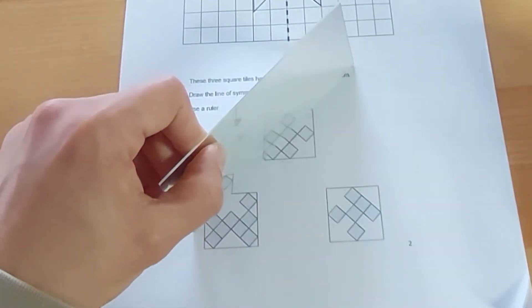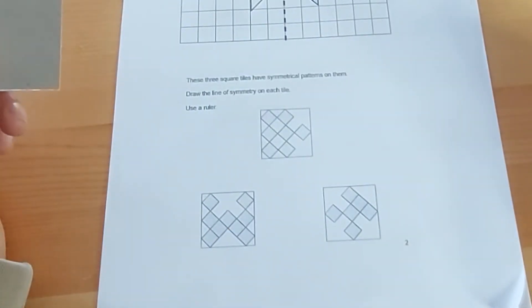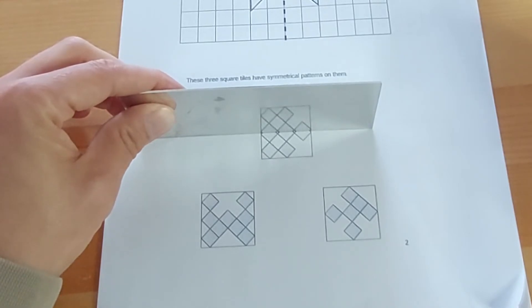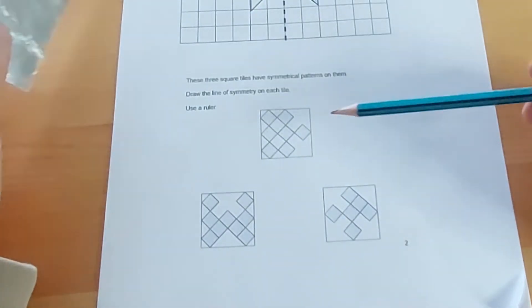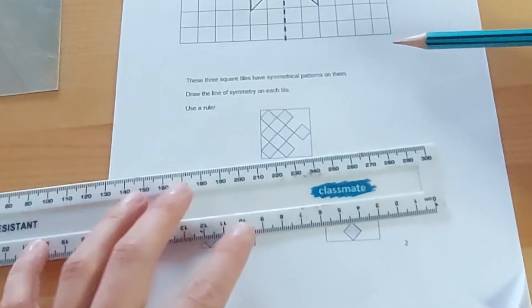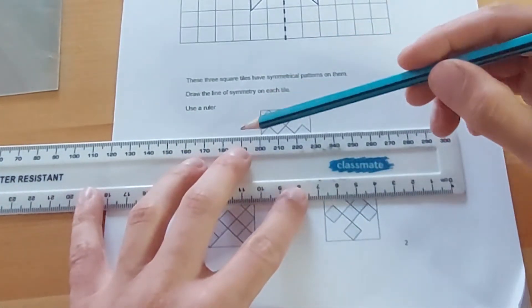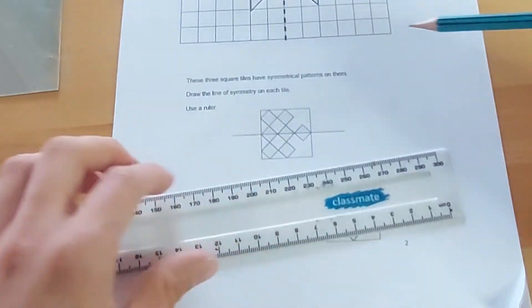I'm going to try. Does that look the same as that? No, that's not our line of symmetry. What if I was to go that way? Does that look the same? Yeah. So that tells me there is a line of symmetry down here. Notice how in the question it says use a ruler. So I'm going to put a ruler to draw my line of symmetry.